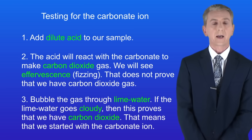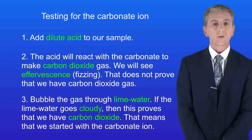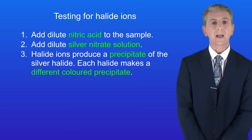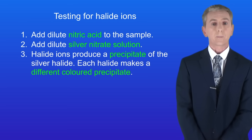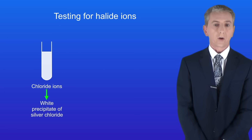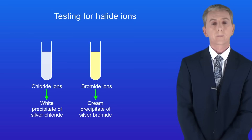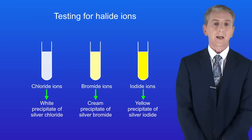Let's look now at how we test for halide ions — in other words chloride, bromide and iodide. Here are the stages. First we add dilute nitric acid to the sample. We then add dilute silver nitrate solution. Halide ions produce a precipitate of the silver halide, and each halide makes a different colored precipitate — you need to memorize them. Chloride ions produce a white precipitate of silver chloride. Bromide ions produce a cream precipitate of silver bromide, and finally iodide ions produce a yellow precipitate of silver iodide.